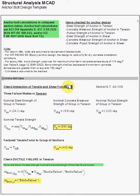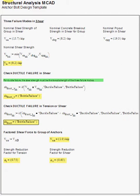The nominal strength for each failure mode in tension is shown here. The nominal strength for each failure mode in shear is shown on this page.